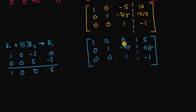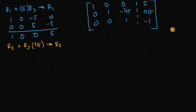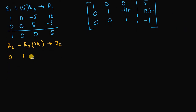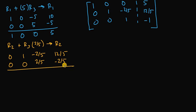We're almost there. The last thing I need to do is turn this element into a 0. I can do that by taking row 2 and adding to it 2/5 times row 3, which will produce our new row 2. Row 2 is 0, 1, negative 2/5, 12/5. Then 2/5 times row 3 yields 0, 0, 2/5, and negative 2/5. Adding these two rows together gives 0, 1, 0, 2. Note that 12/5 minus 2/5 is 10/5, which equals 2.